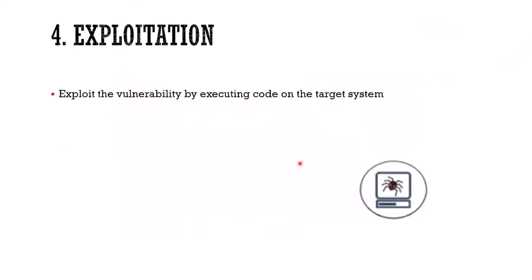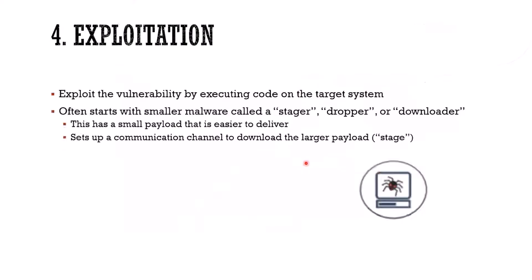Now let's exploit — exploit the vulnerability by executing the code on whatever the target is. Often we'll start with something really small, smaller malware. We'll call that the stager, or dropper, or downloader. It's a little advanced party that, once it gets a foothold, creates a communication back to us to download the larger, more destructive payload — the stage.